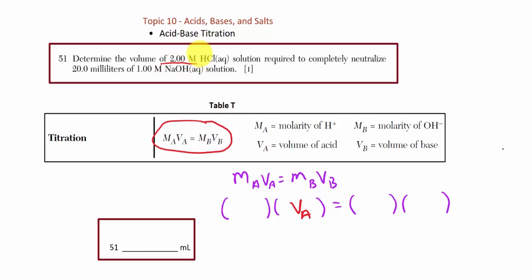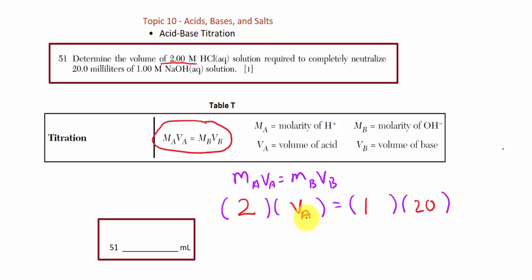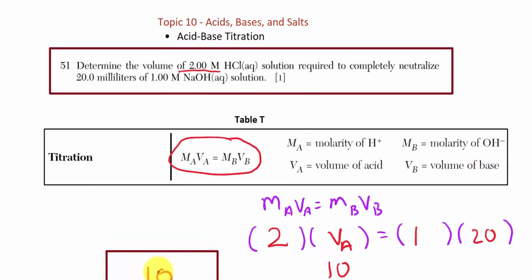We're asked to determine the volume of the acid — that's our VA component. The concentration of the acid is 2 molar, and for the base we have 20 milliliters of 1 molar. So: 1 times 20 equals 2 times x. Our VA value is 10. The answer to this problem is 10 milliliters.